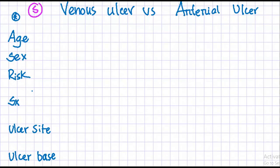Let's talk about the difference between the venous ulcer and the arterial ulcer. First, age. Venous ulcers usually occur in the 40s to 50s, but arterial ulcers are more common in older persons, 60 plus.